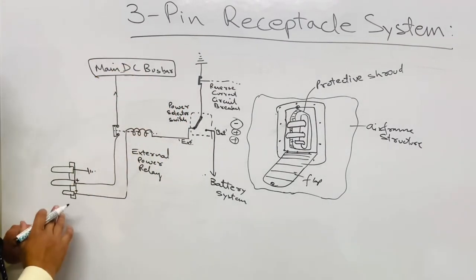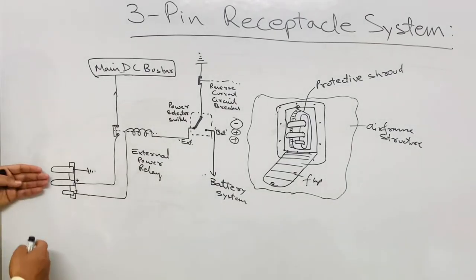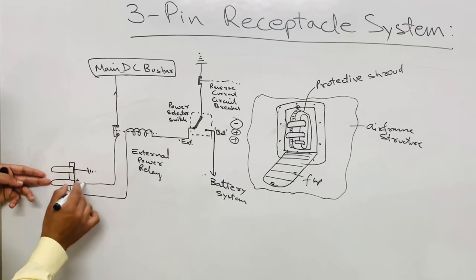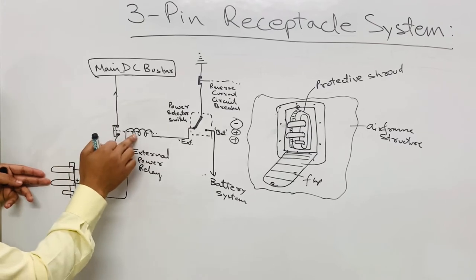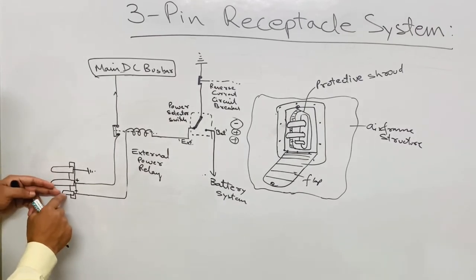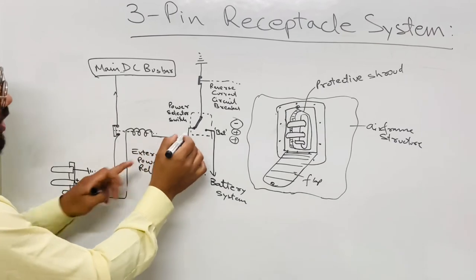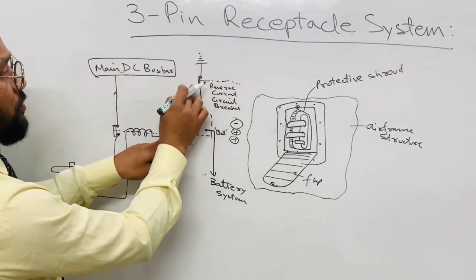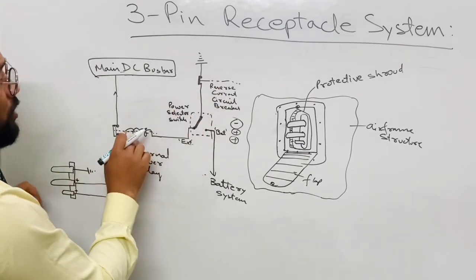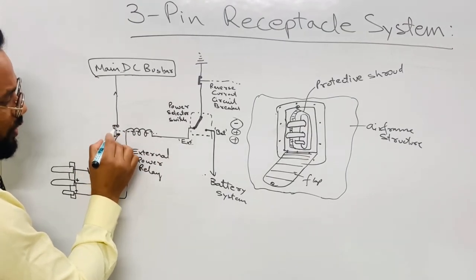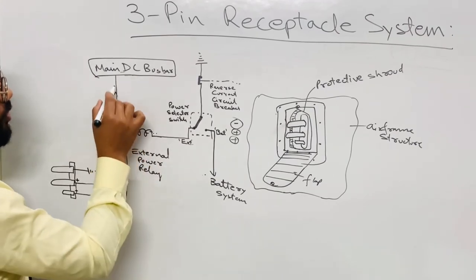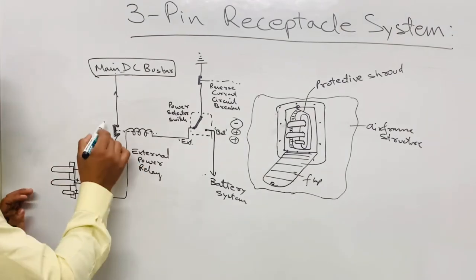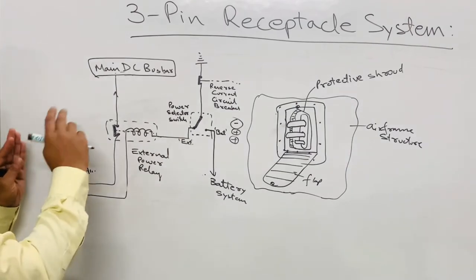So the supply is given to the main DC bus bar when the external power supply is connected. The ground is provided through the negative pin. Positive supply goes in and waits at this point unless the contact is closed. The contact closes when the coil energizes. The coil energizes when the power selector switch is in EXT position and the RCCB contact is closed. Then the heavy duty contact of the external power relay closes and power reaches the main DC bus bar.